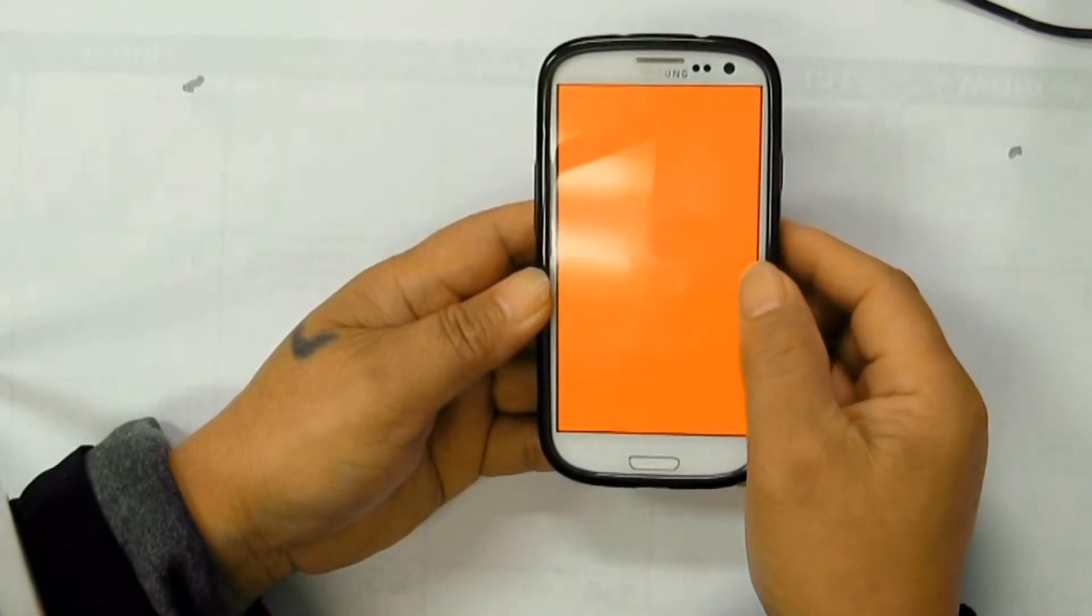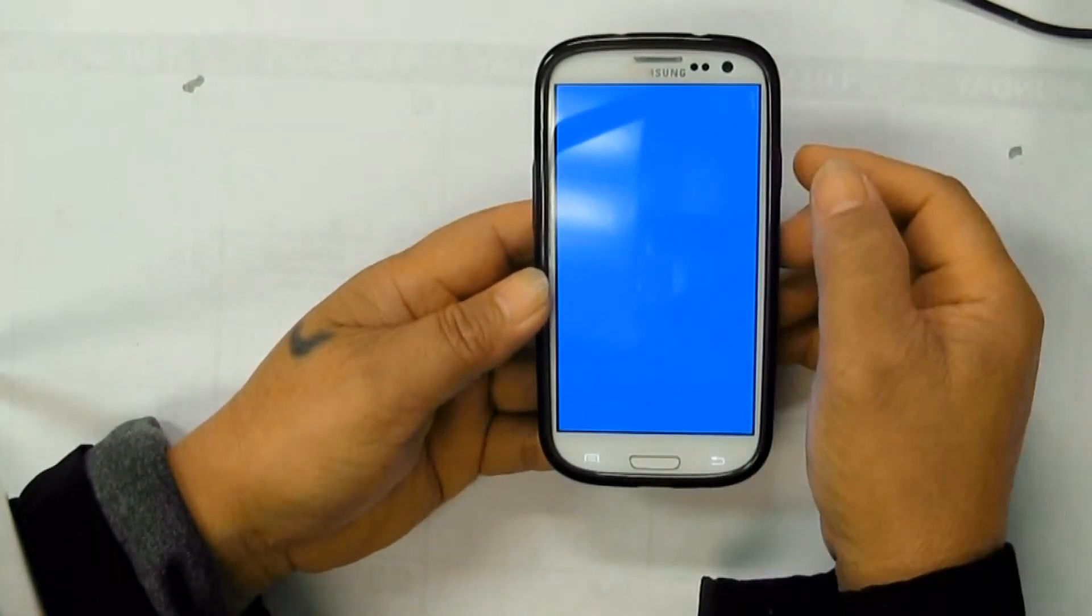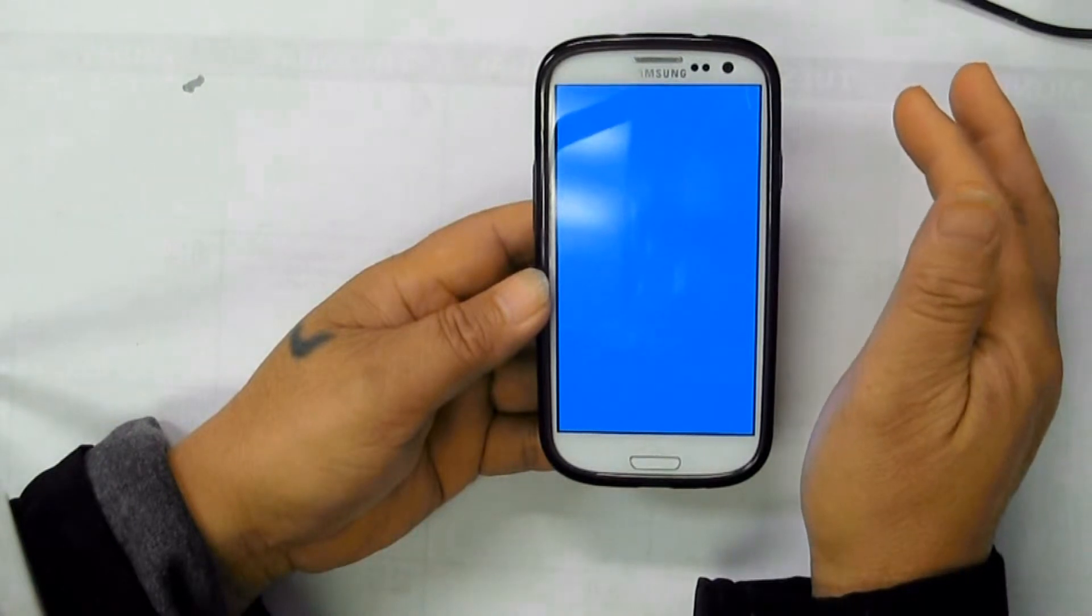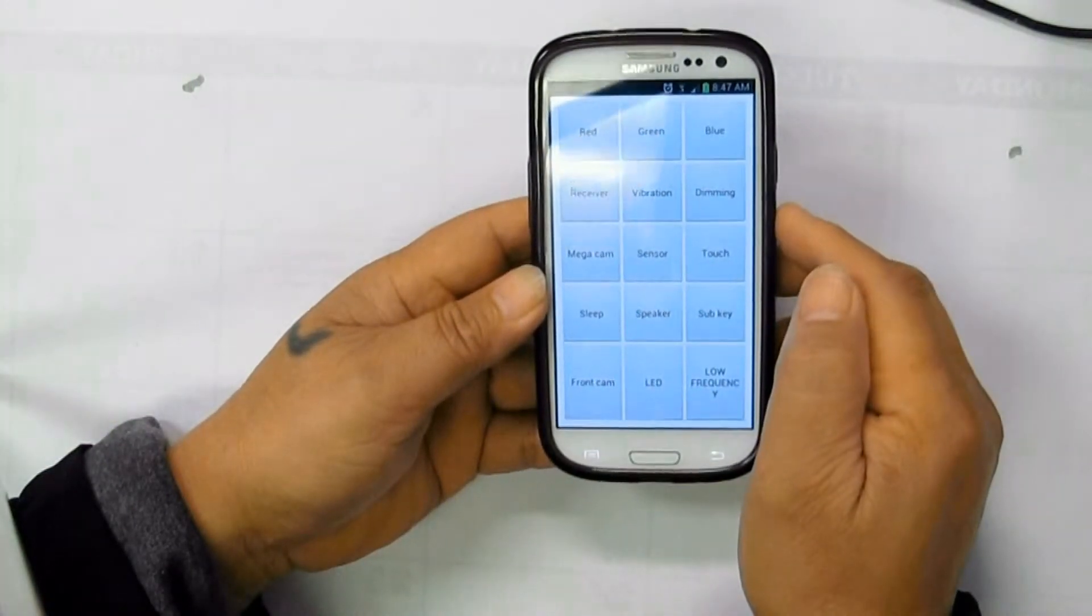Test of screen colors like red, green, and blue. Dimming test.